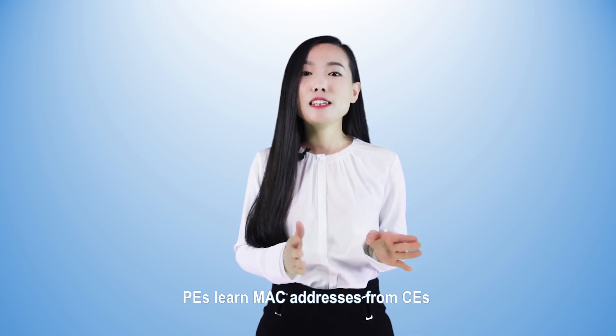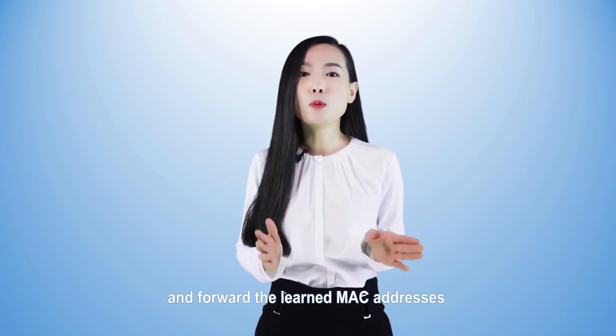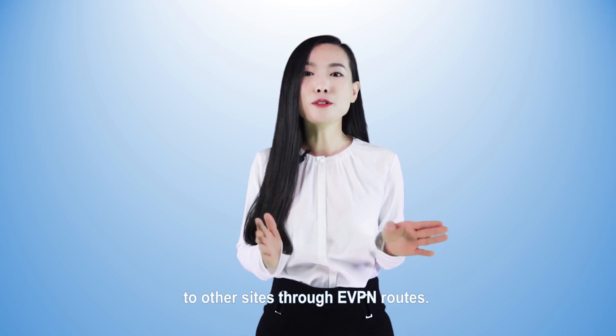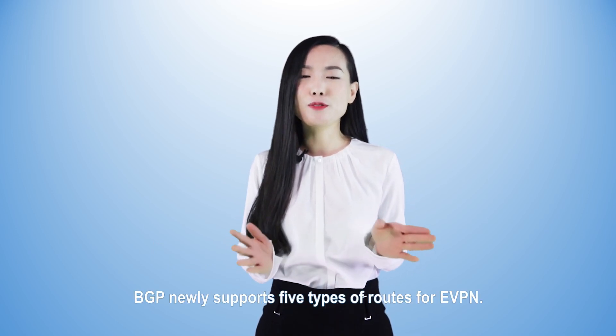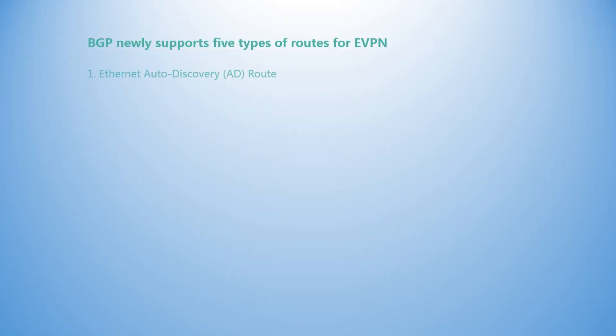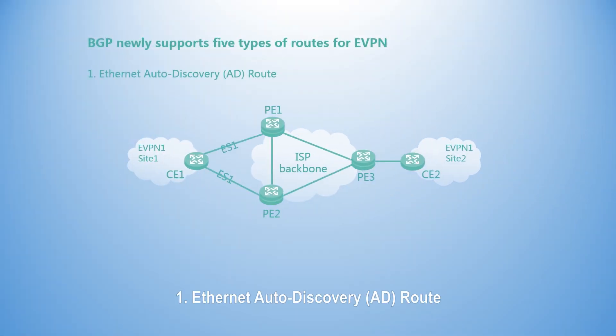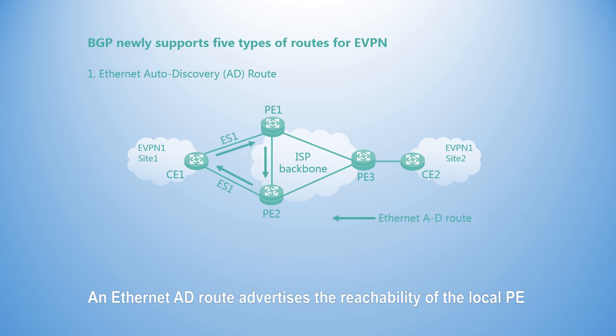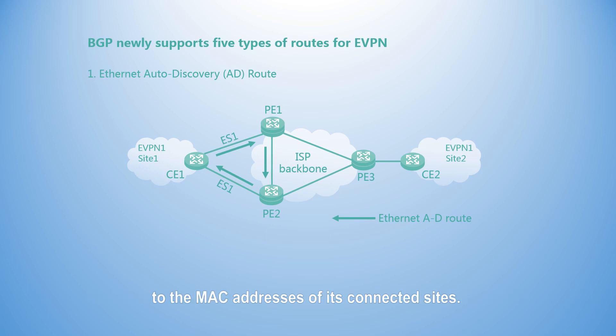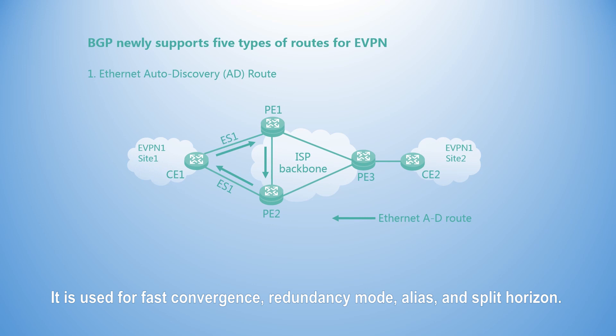On an eVPN, PEs learn MAC addresses from CEs and forward the learned MAC addresses to other sites through eVPN routes. BGP newly supports five types of routes for eVPN. First, the Ethernet Auto-Discovery AD route. An Ethernet AD route advertises the reachability of the local PEs to the MAC addresses of its connected sites. It is used for fast convergence, redundancy mode, alias, and split horizon, and solves the problem of load balancing on the multi-homing network.